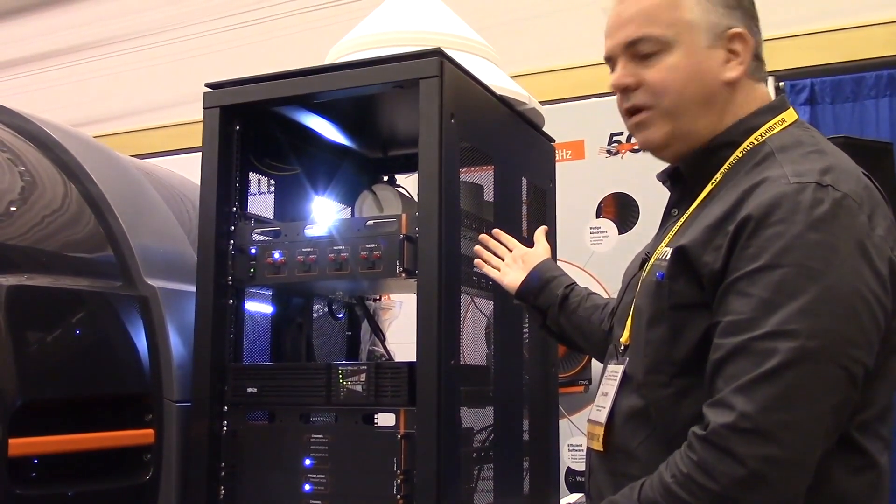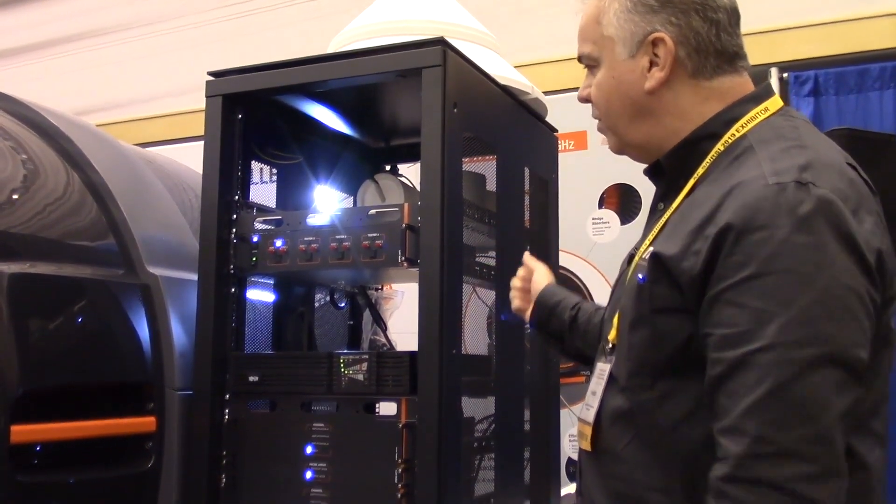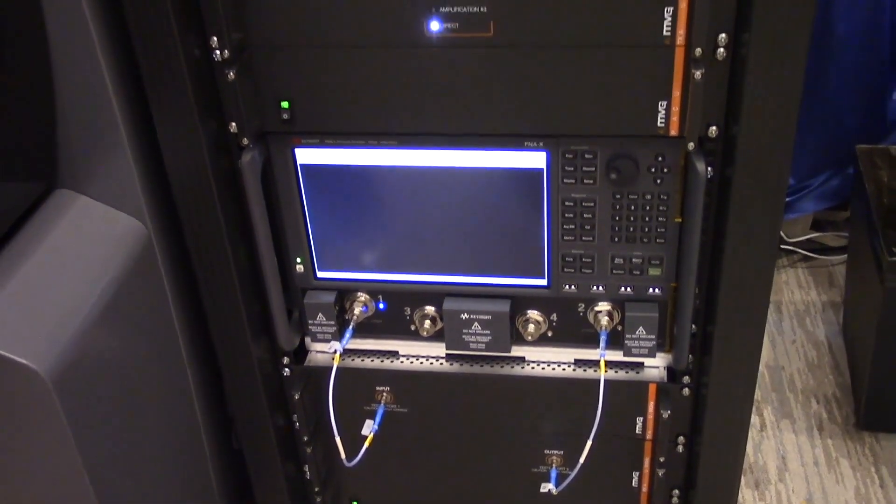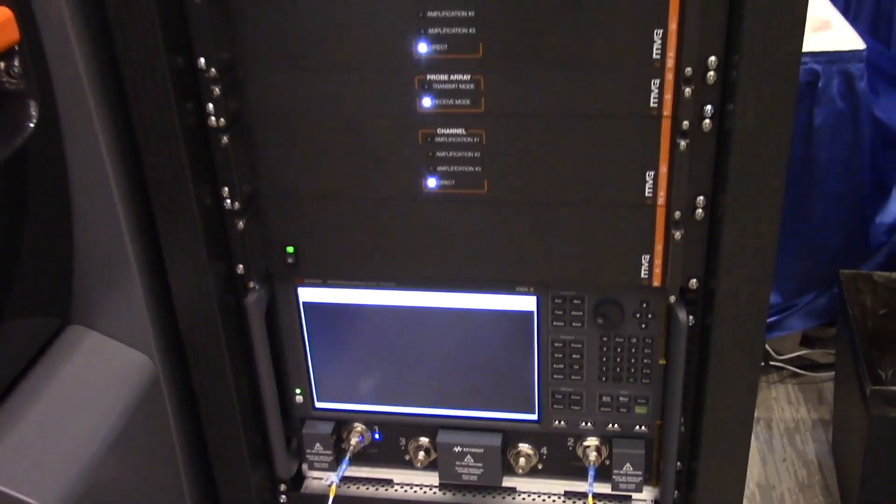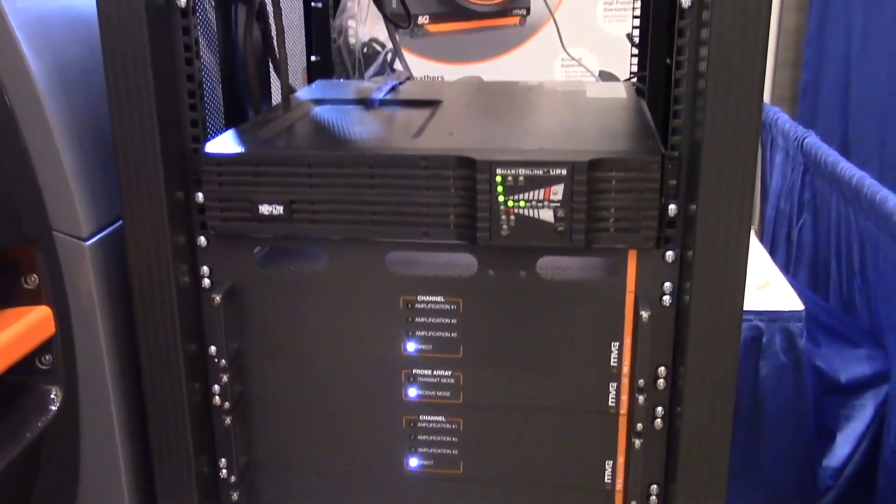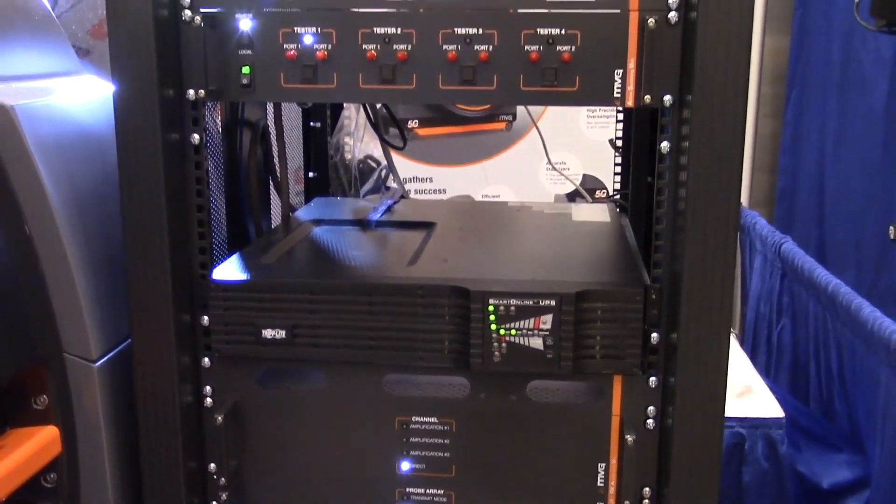Okay so here is the standard test rack equipment that comes with the Starlab system starting with the network analyzer that operates up to 50 gigahertz as well as the switching for the probe array and all the other test setup equipment.